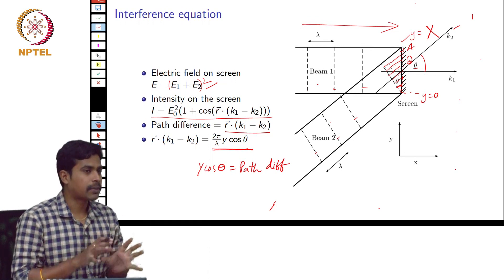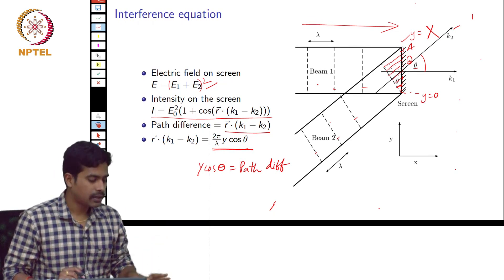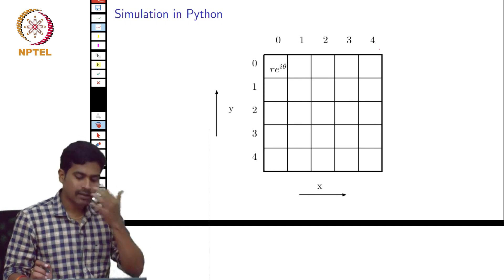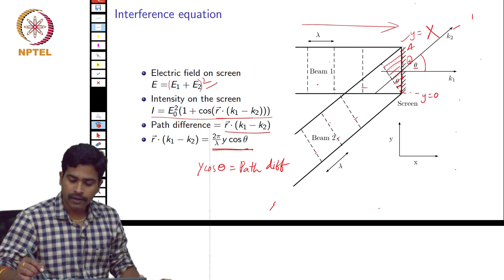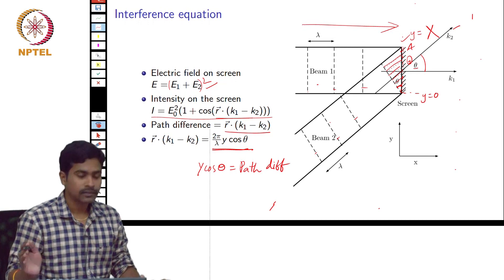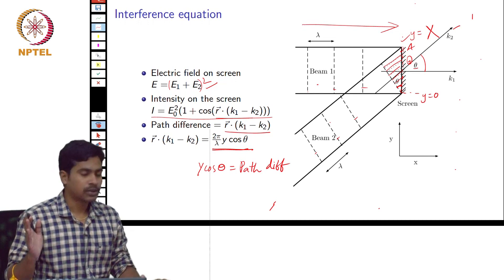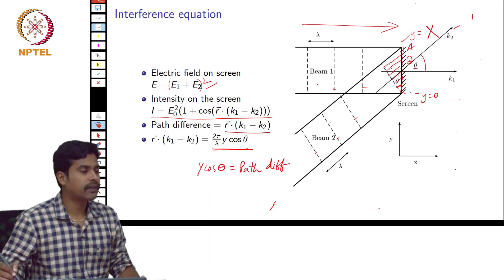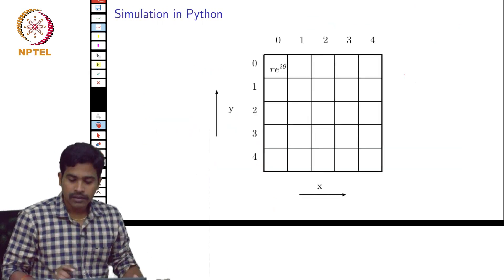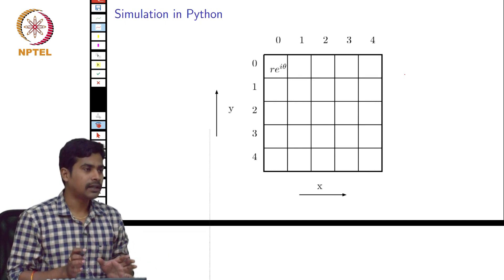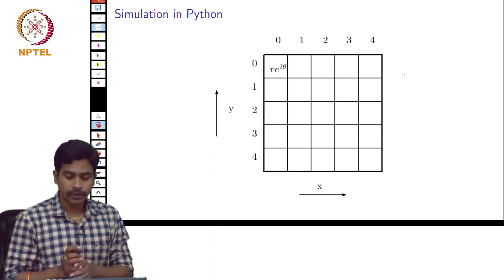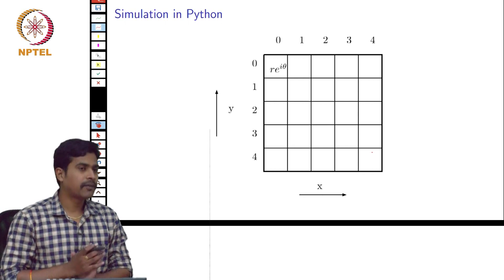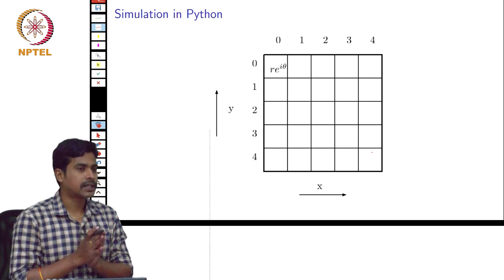Now we have seen what expression to use in order to find the interference pattern. We will now see how to model this same problem in Python. First of all, there are 2 plane waves, and we have to represent each of these plane waves as a matrix in Python — or a NumPy array, which we have seen in the previous lectures. For the first plane wave, the phase along the screen is constant because it is going parallel to the screen, so there is no phase variation for plane wave 1 on the screen. There is a phase variation only for the second plane wave when you look at its projection on the screen. To simulate this, we just have to create 2 matrices in Python — one for plane wave 1 and one for plane wave 2 — representing the phase values at each of these points. Since plane wave 1 has a constant phase on the screen, the matrix is going to have all constant phase values.